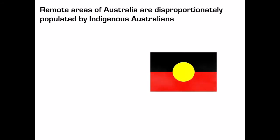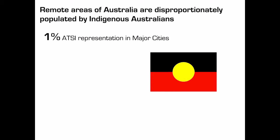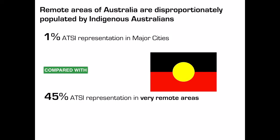Remote areas of Australia are disproportionately populated by Indigenous Australians. Only 1% of the ATSI population is in major cities, compared with 45% in very remote areas and 16% in remote areas. We know from our study of ATSI peoples that they have a large health gap when compared to the rest of the population.